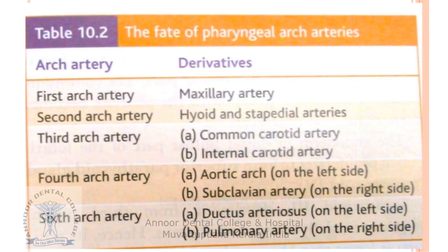The arteries derived from each arch are: first arch — maxillary artery; second arch — hyoid and stapedial artery; third arch — common carotid and internal carotid arteries; fourth arch — aortic arch on the left side and subclavian artery on the right side; sixth arch — ductus arteriosus on the left side and pulmonary artery on the right side.